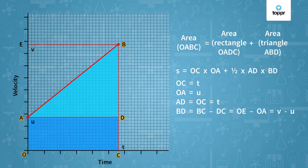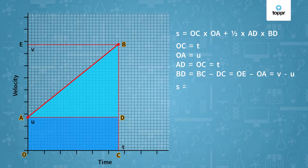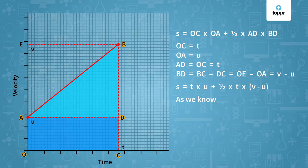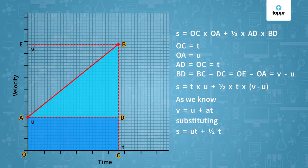So we substitute all this in the first equation. We can see that S is equal to T multiplied by U, plus half into T into (V minus U). From the first equation of motion we already know that V is equal to U plus AT. Substituting this, it becomes S equals UT plus half into T into (U plus AT minus U), and that's how we get our second equation of motion: S equals UT plus half AT².